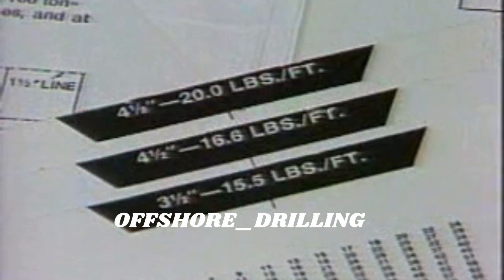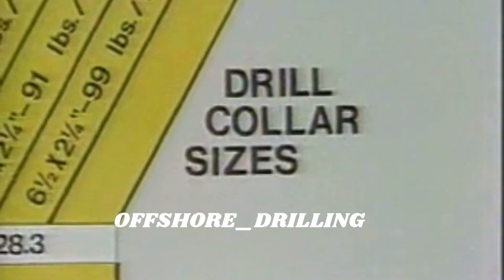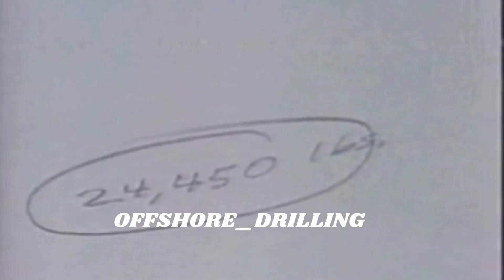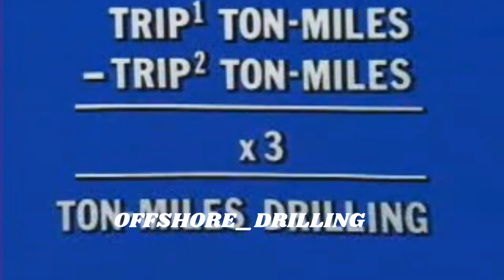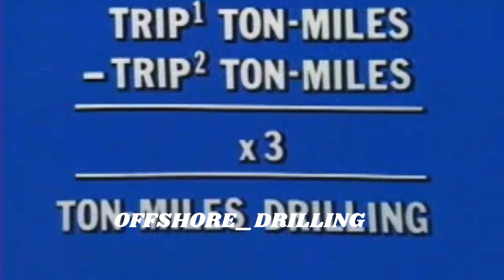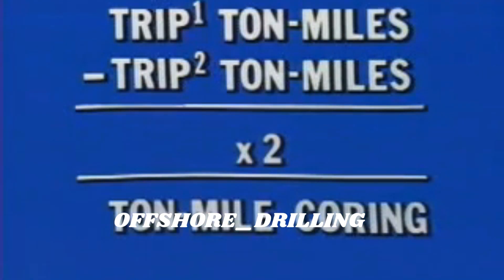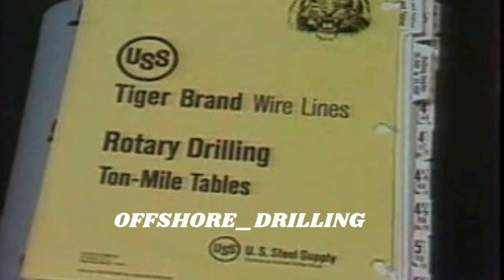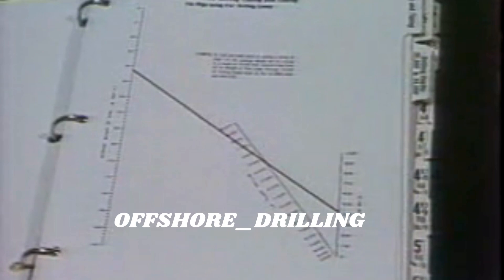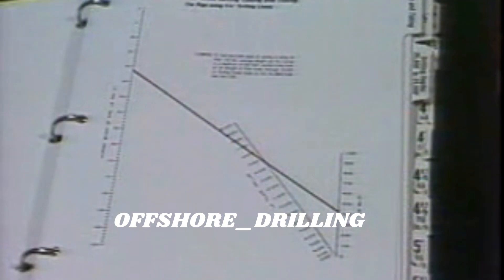You've got to know your drill pipe size and weight, drill collar size and number, the weight of the traveling block assembly, and the depth of the trip. For ton-miles drilling, take the difference between round-trip ton-miles before and round-trip ton-miles after drilling, multiply by three. For ton-miles coring, multiply by two. And for ton-miles setting casing, use the charts in your IADC manual or your ton-mile tables. You can also figure casing ton-miles based on one-half the round-trip ton-miles for drill pipe of comparable weight.